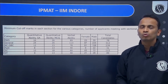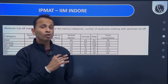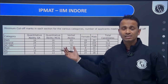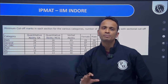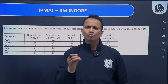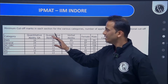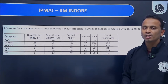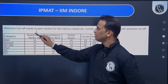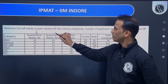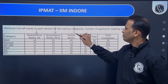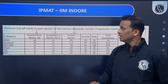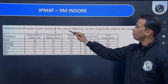Now, talking about the previous year cut-offs — this information is taken from the official website of IIM Indore. Everything is given on the official website. If I talk about the sectional cut-offs of quantitative aptitude (subjective answers), quantitative aptitude MCQs, and verbal ability MCQs — these are the minimum cut-off marks in each section for various categories.